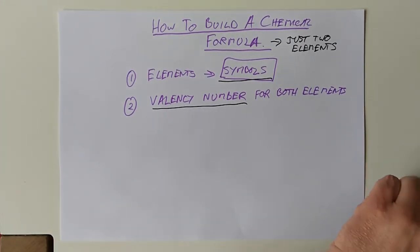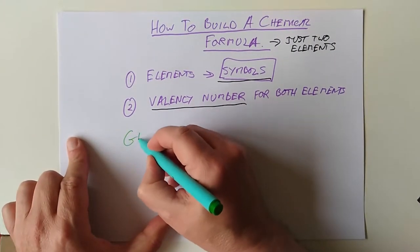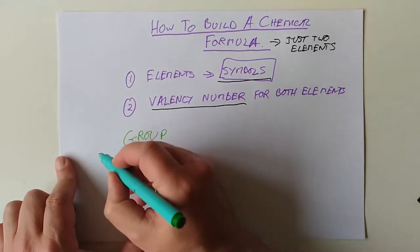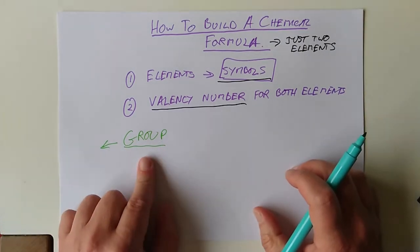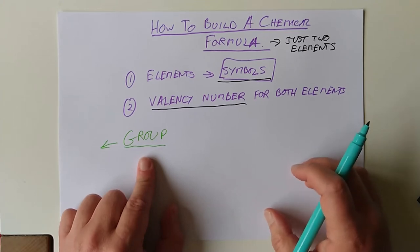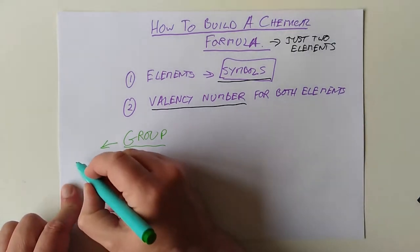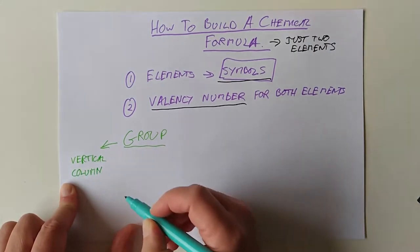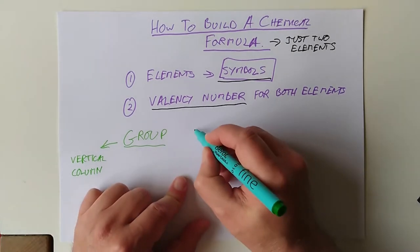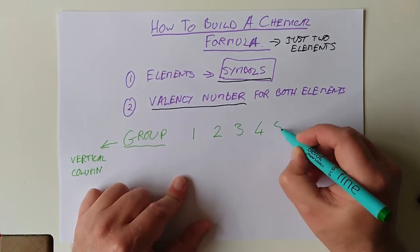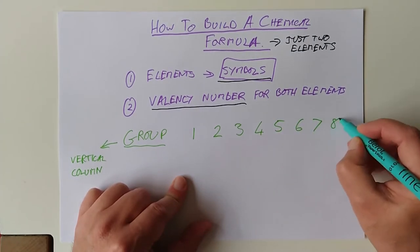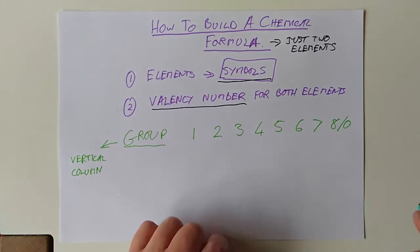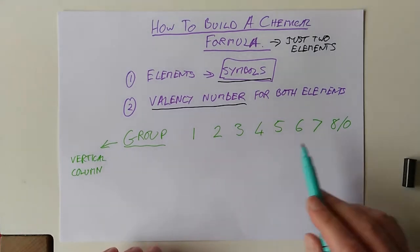I did say it's how to build a chemical formula, but because we're just in third year at the moment, we'll keep things relatively simple and we'll say it's a chemical formula containing only two elements. How to build a chemical formula for just two elements. You get the symbols, then you need to get this valency number for both of your elements. Where does this number come from? Well, the good news is it comes from the group.